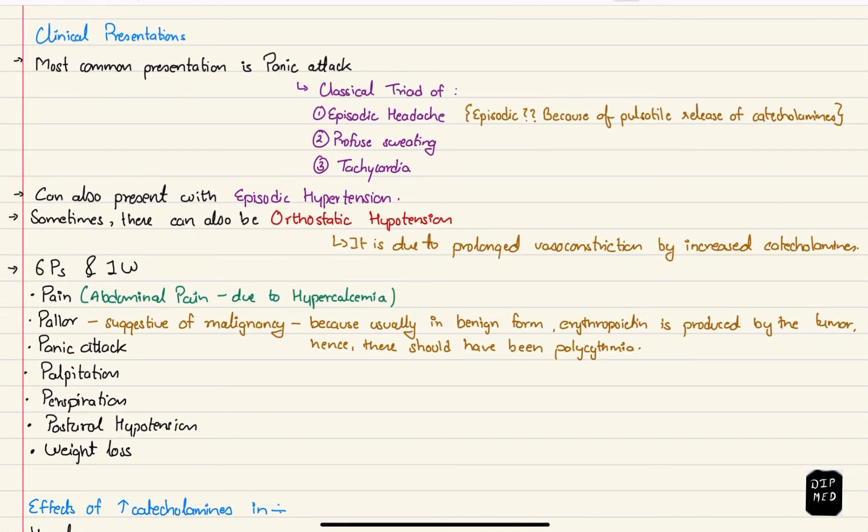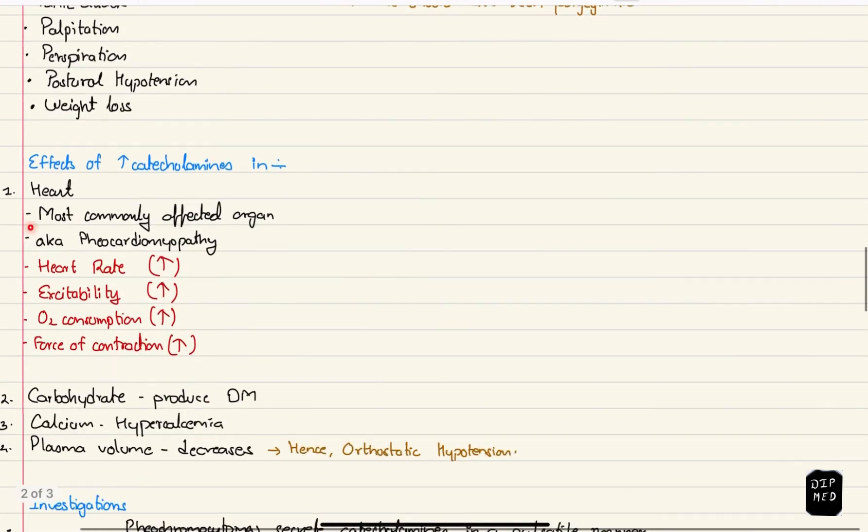Remember 6Ps and 1W for features of pheochromocytoma. Pain meaning abdominal pain which is due to hypercalcemia. Pallor if seen might be suggestive of malignancy because in benign form the tumor secretes erythropoietin which actually causes polycythemia. Next P stands for panic attack, palpitation, perspiration, postural hypotension and lastly W stands for weight loss. Heart is the most commonly affected organ by the increased catecholamines. It is also known as pheochromocardiomyopathy.